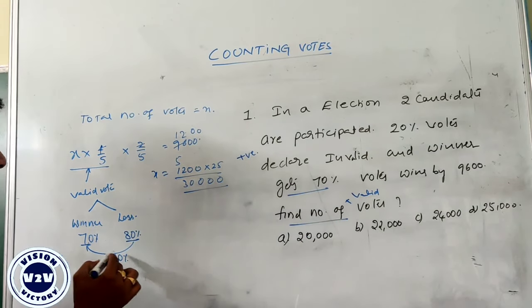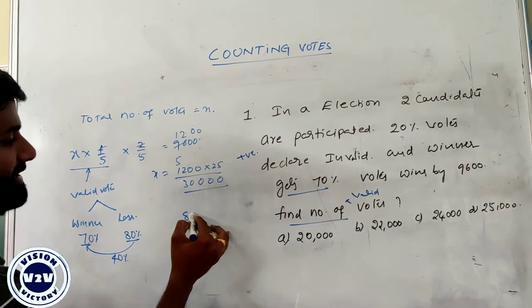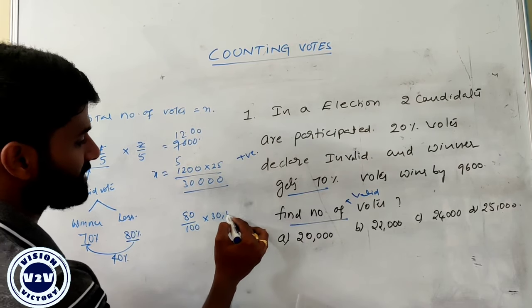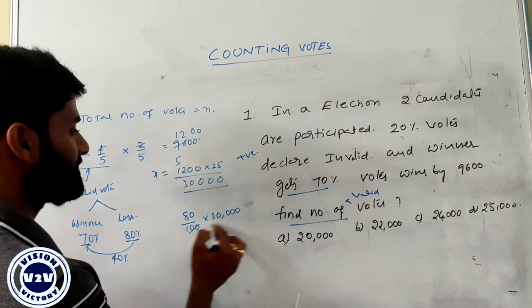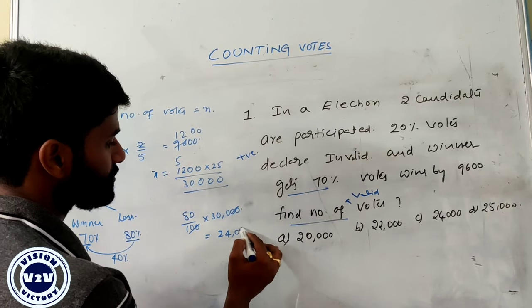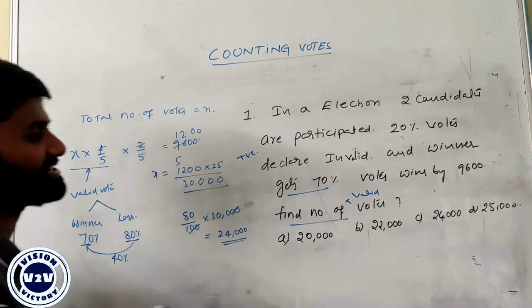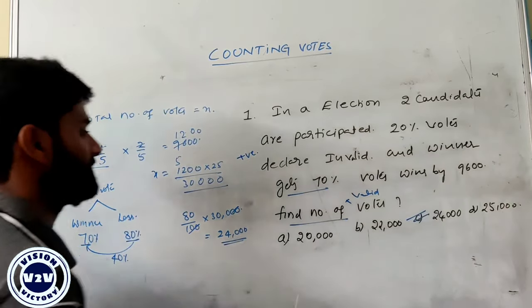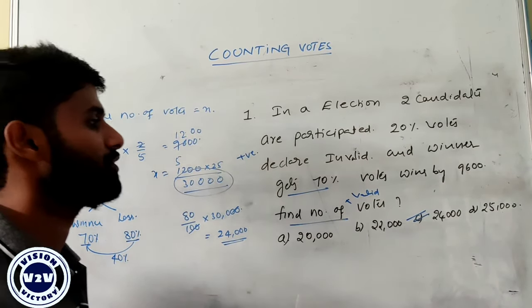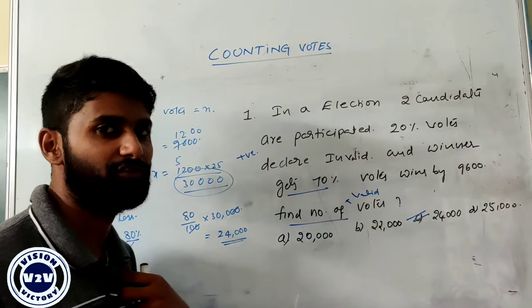Find the number of valid votes. Valid votes exactly equal to 80 percentage. So 80 percentage of 30,000: double zeros cancel, 8 threes are 24,000. The number of valid votes in this election is equal to 24,000. If the question asks for total votes, total votes equals 30,000; if it asks for valid votes, that is 24,000.